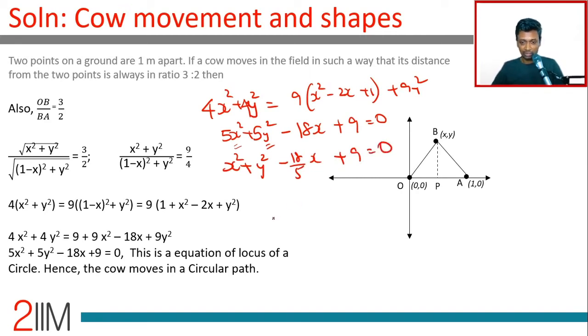How will we simplify this? We will now say we can write this as x square minus 18 by 5x plus something with a perfect square plus y square equal to some constant. So the form (x minus h) the whole square plus (y minus 0) the whole square equal to radius square. Or this will move in a circular path.